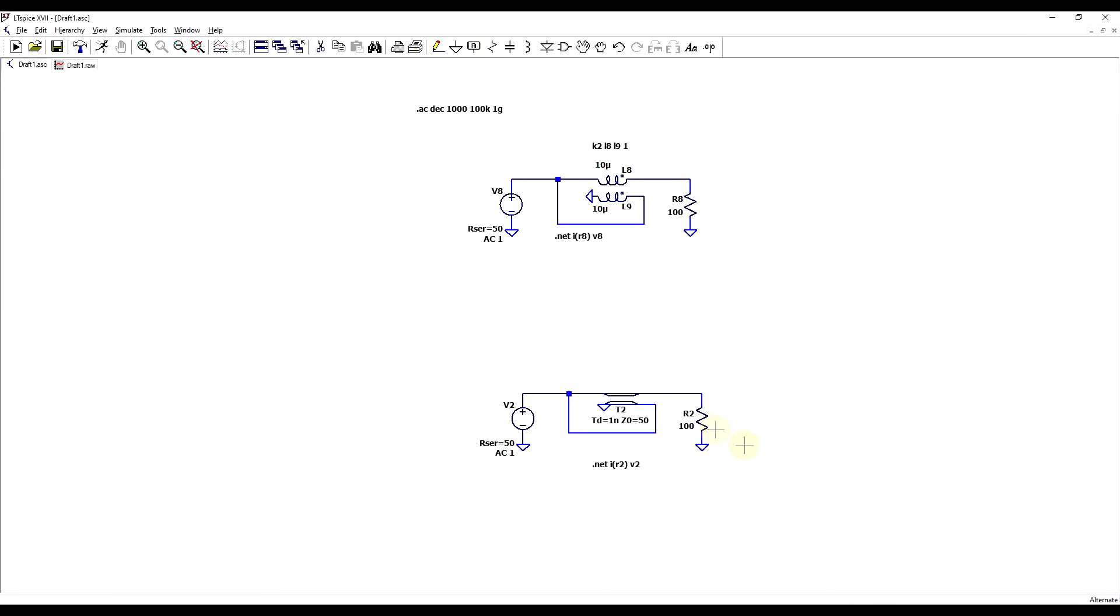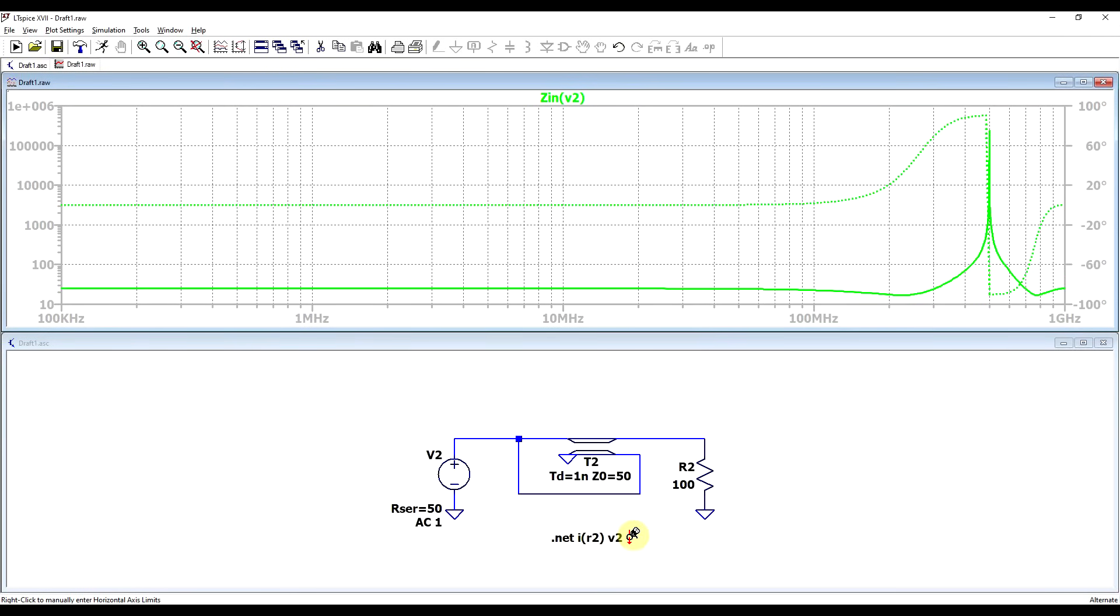The next circuit to check out is the same thing, but built with a transmission line. Here, the two lines are coupled, both magnetically and electrically, so this should also perform the task of a transformer. If we again check the input side impedance, well, the low frequency behavior seems to be ideal, that's not good, but at least at the high frequency end, it does seem to behave similarly to our measurement.